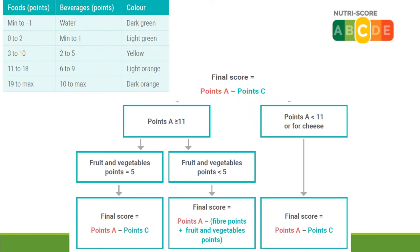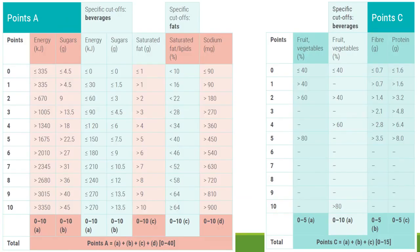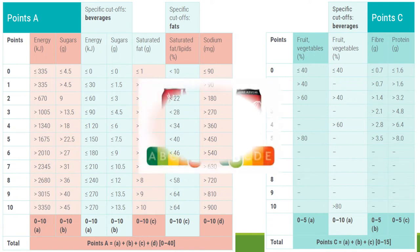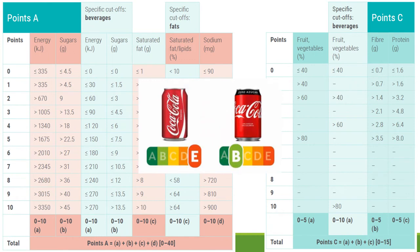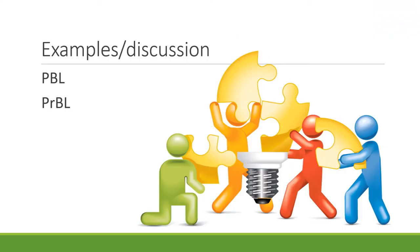The tables showing how the Nutri-Score is calculated are presented here. Depending on whether we have food or a beverage, certain points are assigned to produce a final score. Based on the content of energy, sugar, saturated fats, sodium, share of fruits or vegetables, fibers, and proteins, a final Nutri-Score is produced. This is shown on a product label — the same product with different ingredients falls into category E or category B.